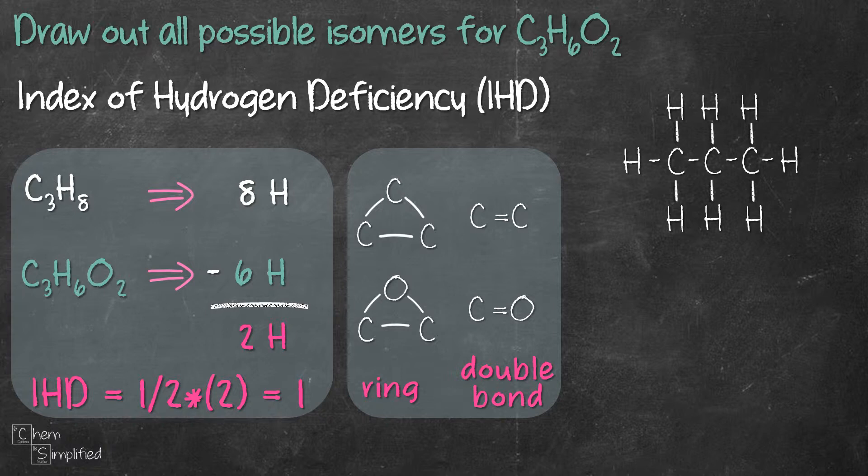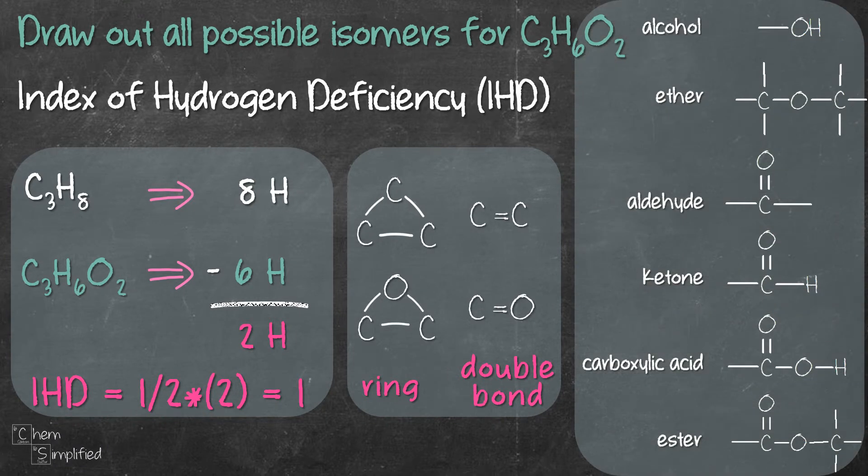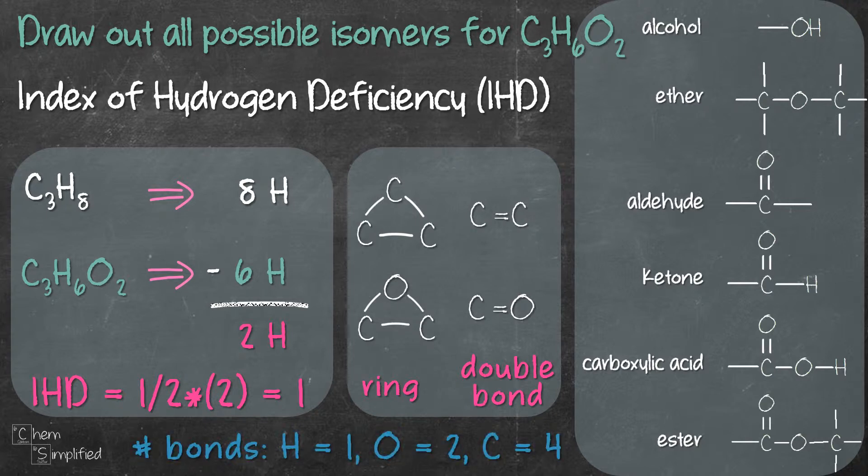Since we're dealing with two oxygen atoms in this formula, it will also be very helpful for us to recall all the functional groups that involve oxygen. So we'll be working with all of these functional groups in the next few minutes. Another thing to keep in mind is the number of bonds each of these atoms normally makes. Hydrogen makes one bond, oxygen makes two bonds, and carbon makes four bonds. We're now ready to draw out all of our isomers. Let's get started.